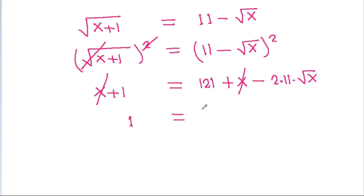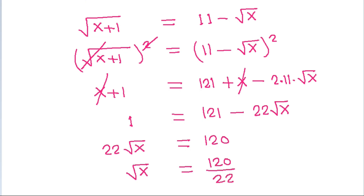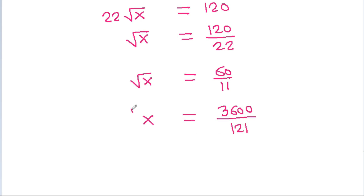So 1 is equal to 121 minus 22 times a square root of x. Therefore 22 times a square root of x equals 121 minus 1, which is 120. So a square root of x equals 120 divided by 22, which simplifies to 60 divided by 11. Therefore x equals 3600 divided by 121.